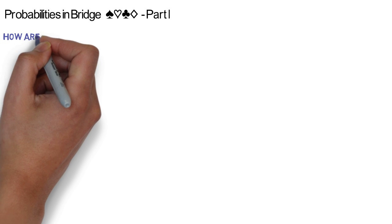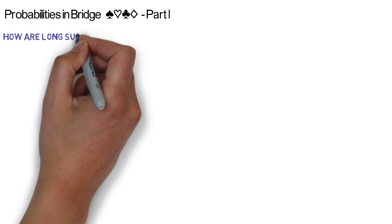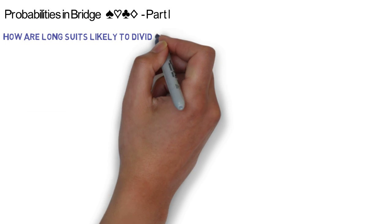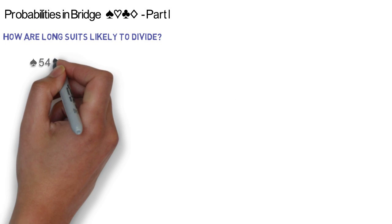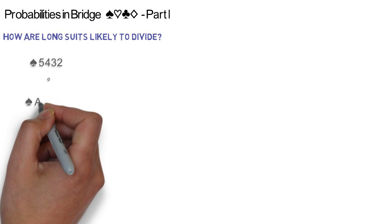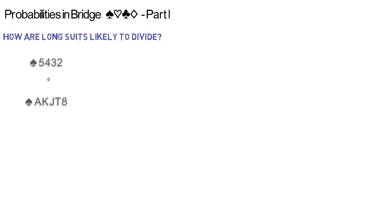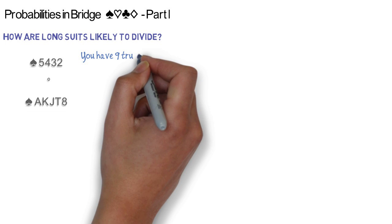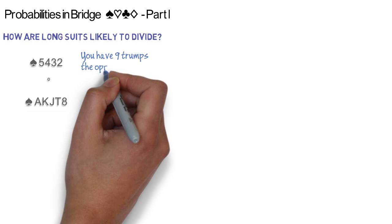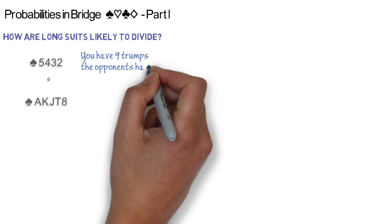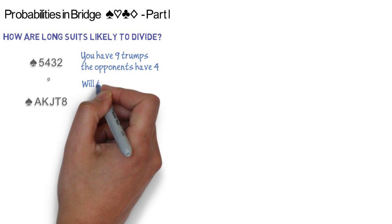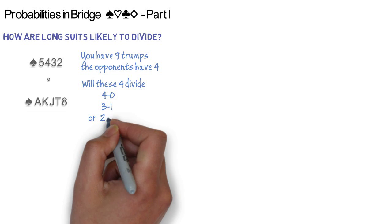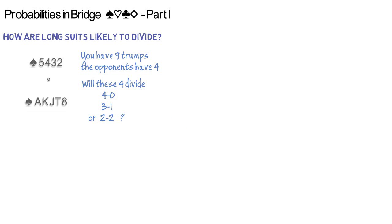How are longsuits likely to divide in the opponent's hands? You have 9 trumps. The opponents have 4. Will these 4 divide 4-0, 3-1, or 2-2?